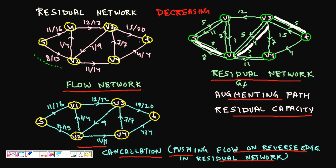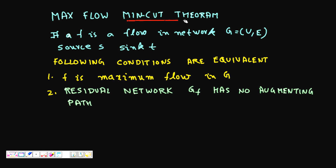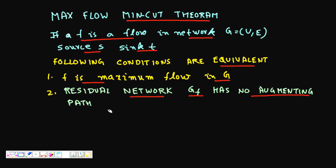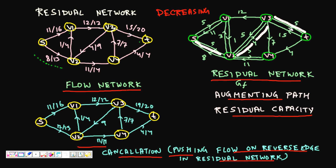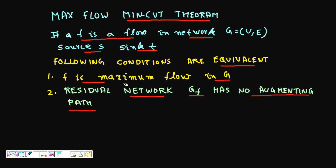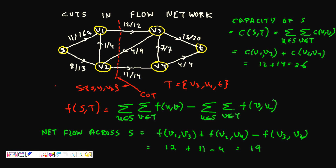The max flow-min cut theorem states: if f is a flow in the network with source s and sink t, the flow is a maximum flow if and only if the residual network G_f has no augmenting path remaining. The process is: build the residual graph, find augmenting paths, update flows, and repeat until no augmenting path exists in the residual graph.